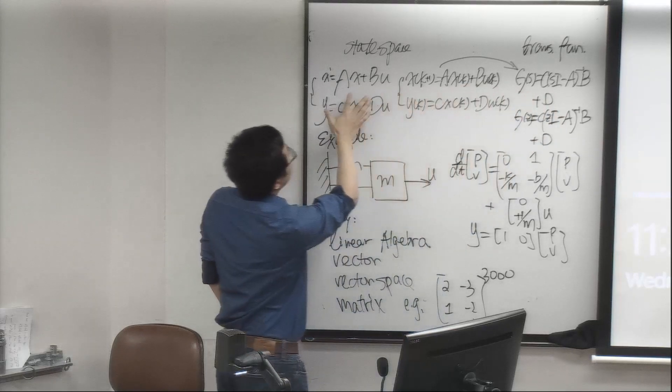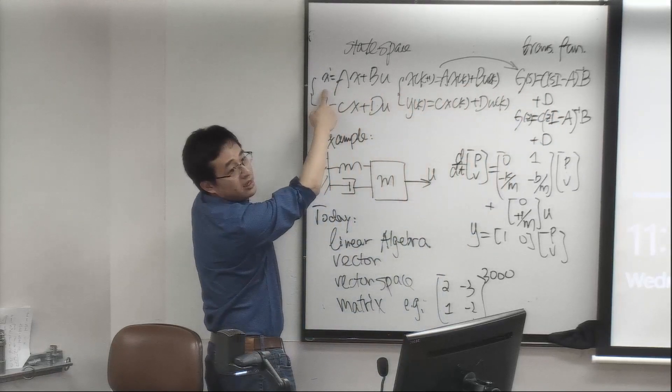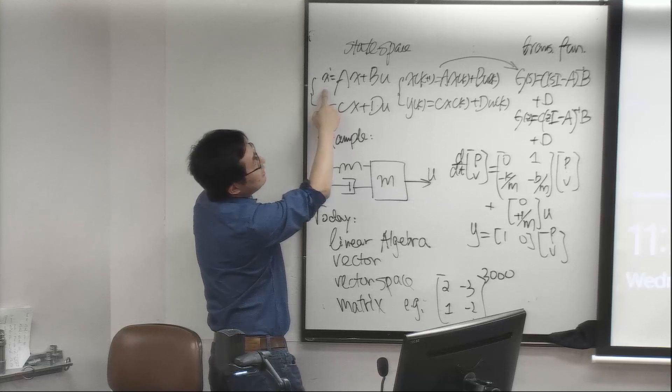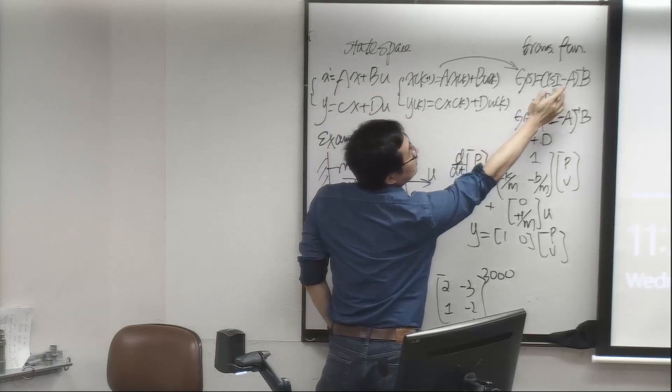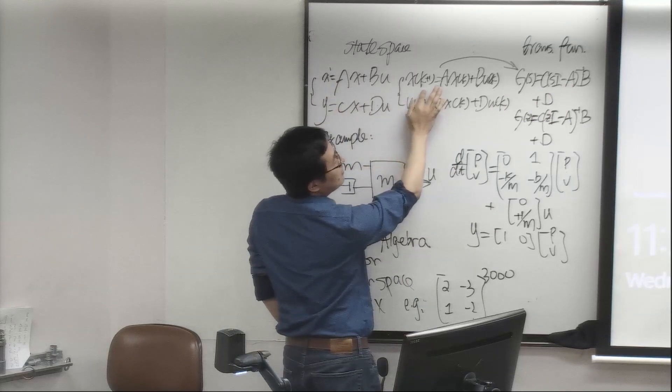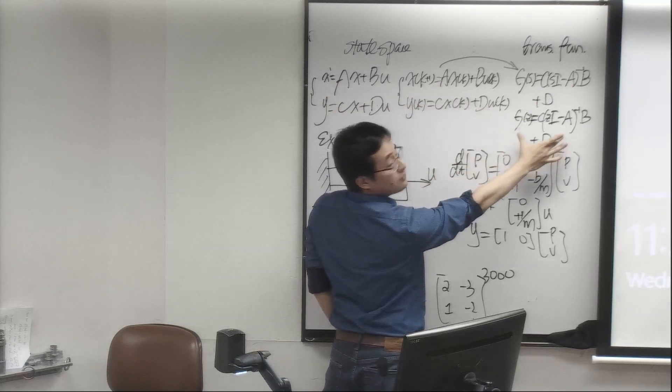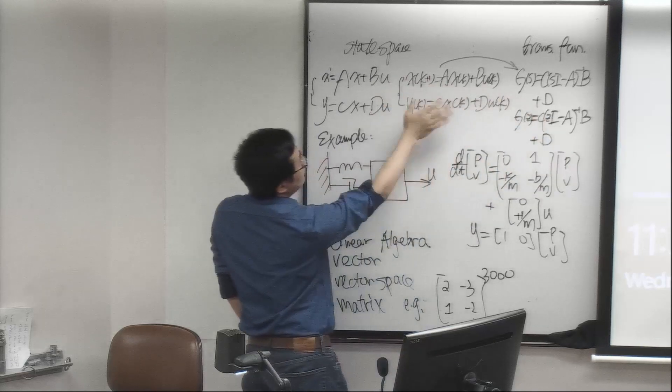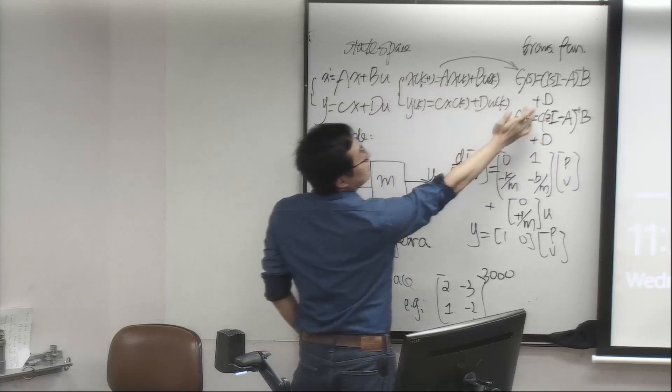You just apply Laplace transform, then you can get the transfer function from U to Y. Same thing, you apply Z transform to this one, then you can get to know the transfer function pretty well. So it is very straightforward to go from one side to another.